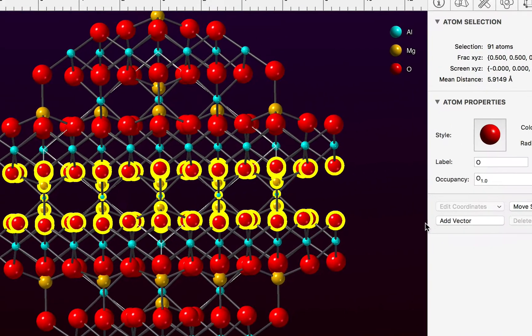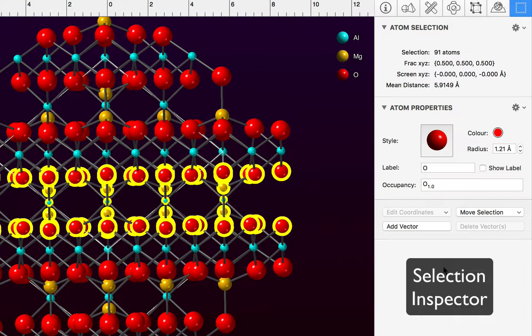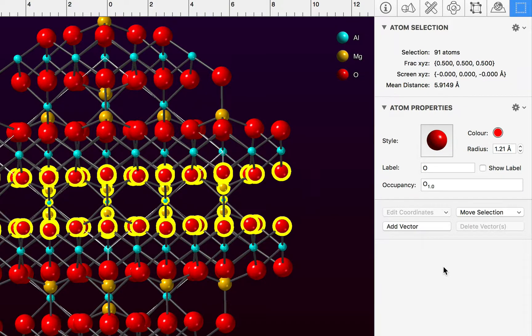Now on the right hand side of the screen we have our selection inspector. Anything that is selected has its properties displayed here and you can see I've selected 91 atoms.